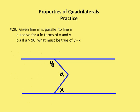Given line M is parallel to line N, solve for A in terms of X and Y. And if A is greater than 90, what must be true of Y and X? So this is a crook problem. And so we're going to draw a parallel line, our line that's parallel to the first line M and the second line N.